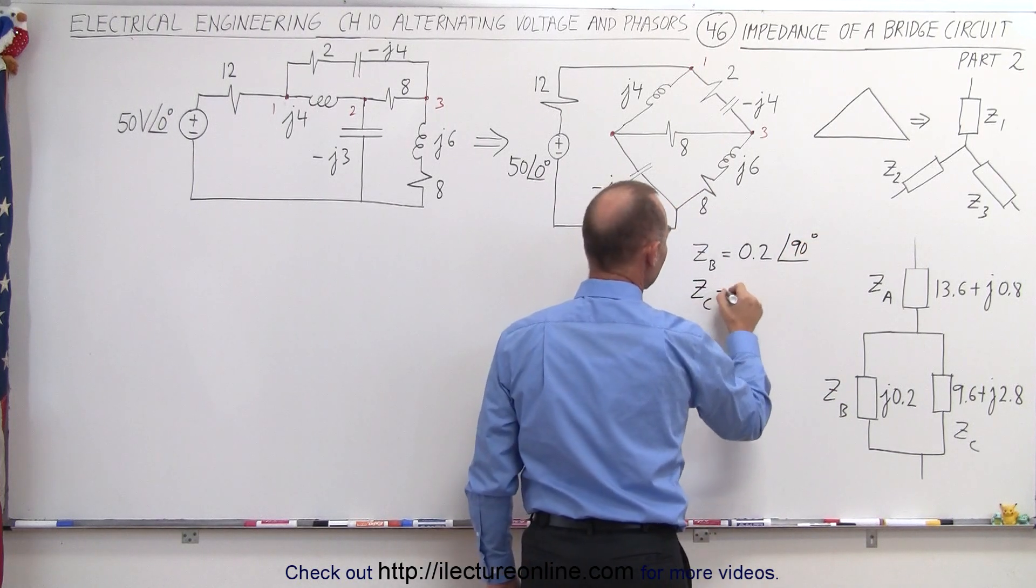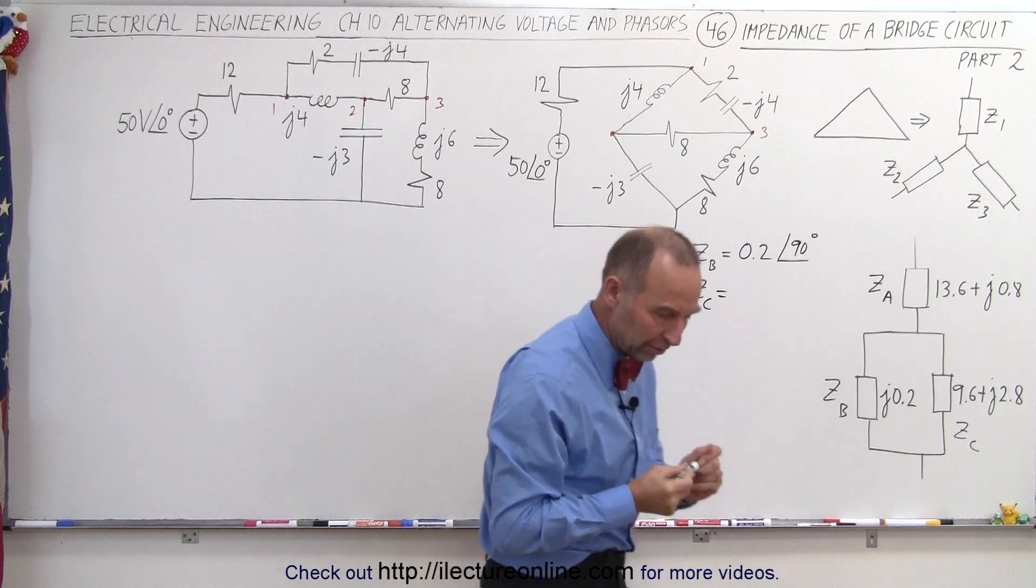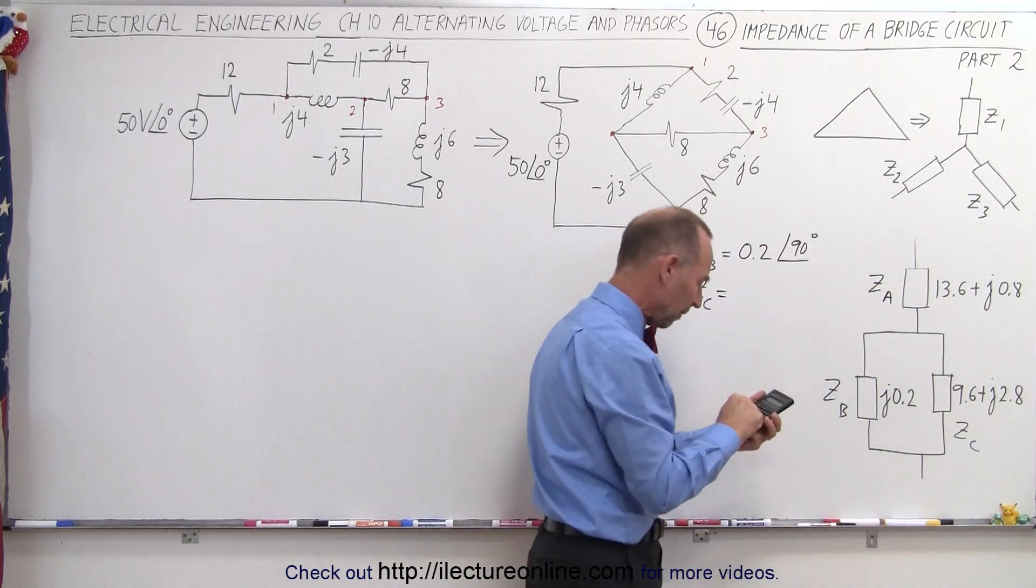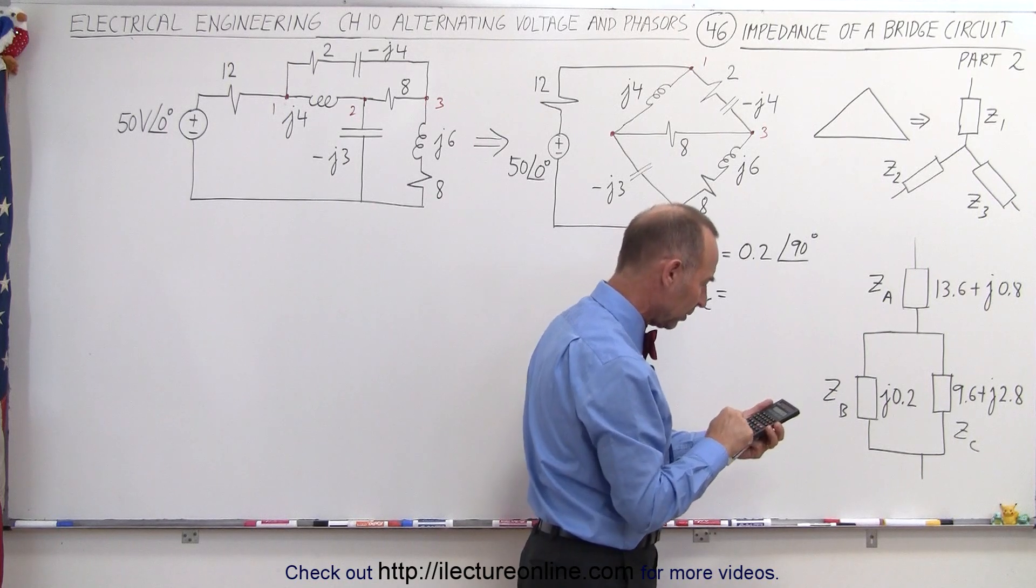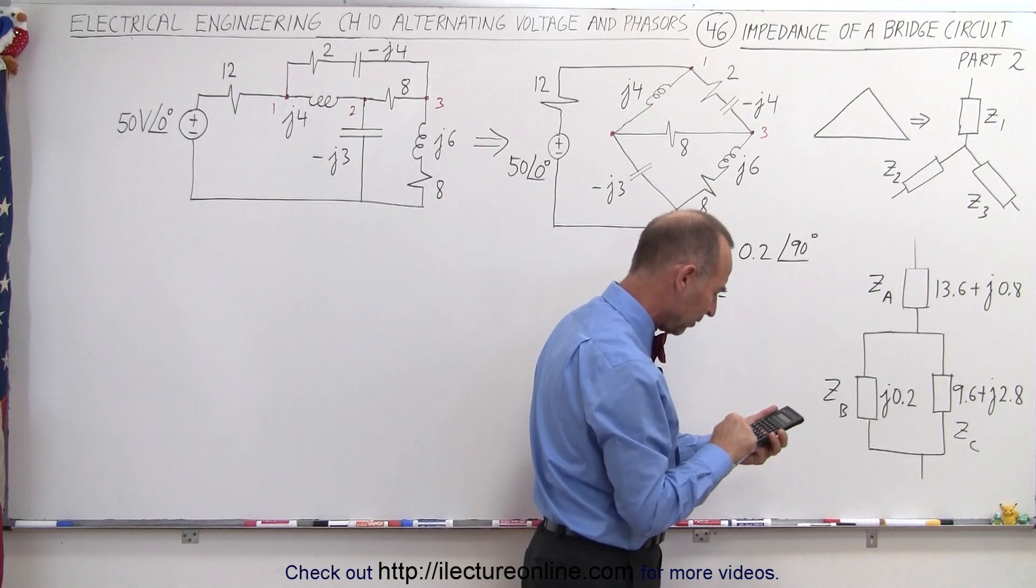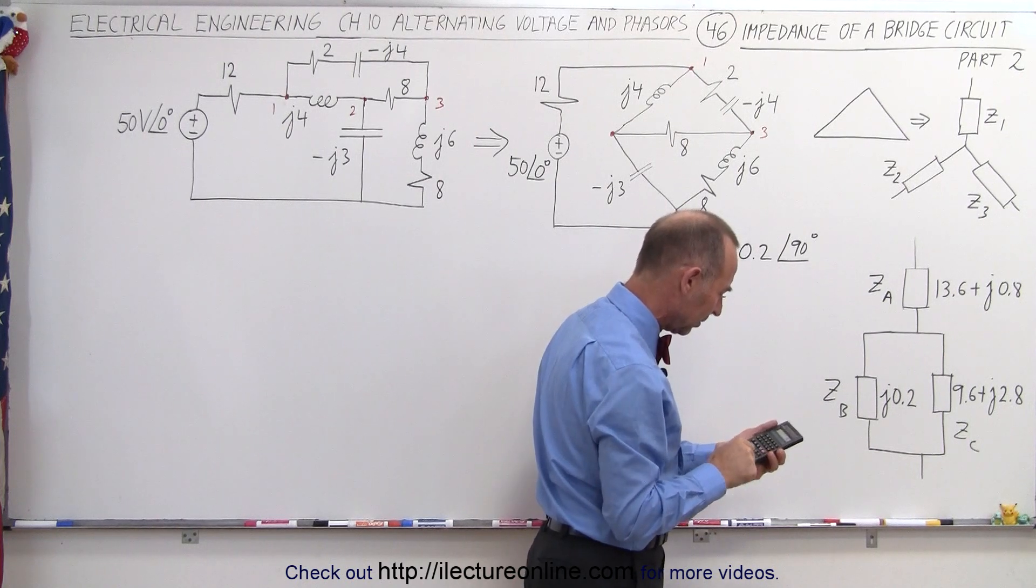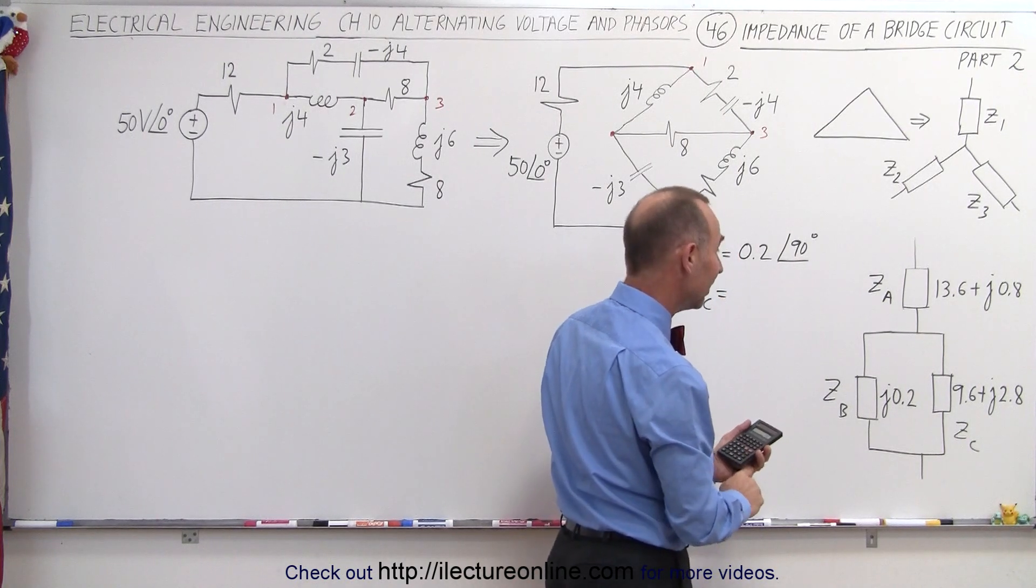On ZC, that will be equal to, to find the magnitude, we square those two. So we have 9.6 squared plus 2.8 squared and take the square root of that. So we end up with exactly 10. That's pretty neat.